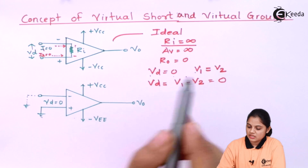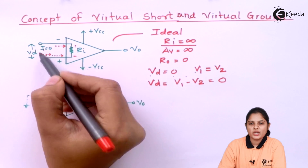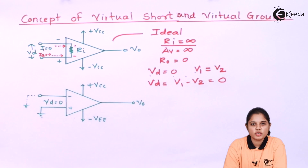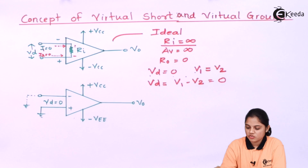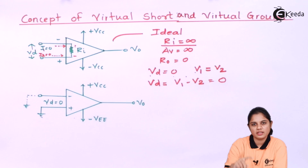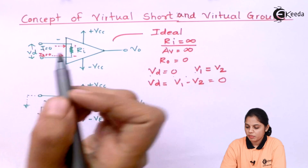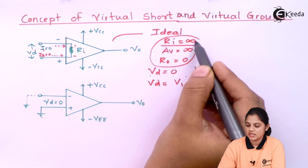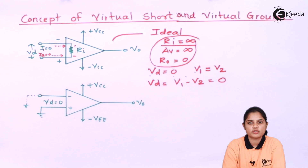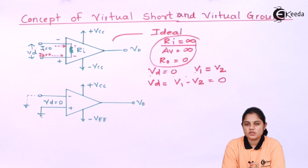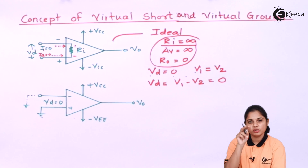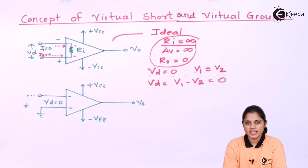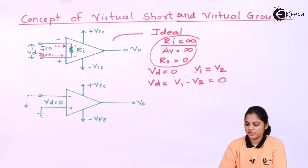Vd is nothing but V1 minus V2, and if V1 and V2 are the same, then it is zero. Because of this, it is known as a virtual short. We have not actually shorted the terminals, but due to these ideal characteristics, they act as a virtual short. Both terminals remain at the same potential and the differential input voltage becomes zero.